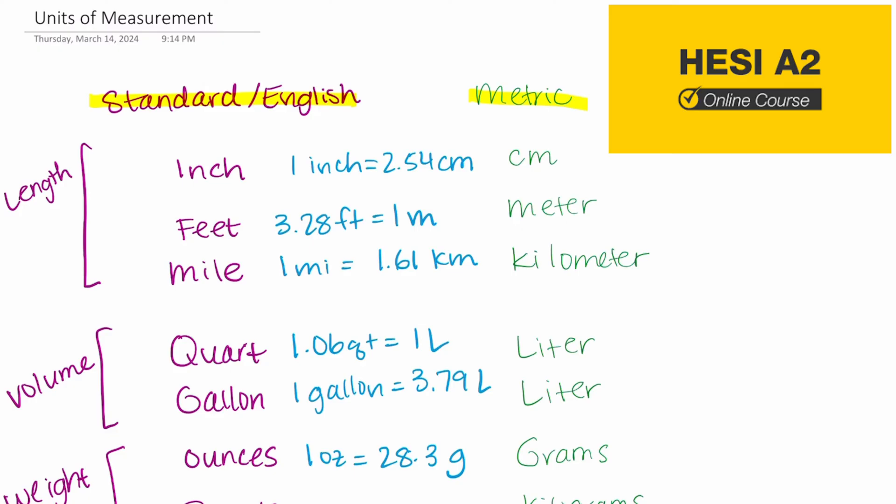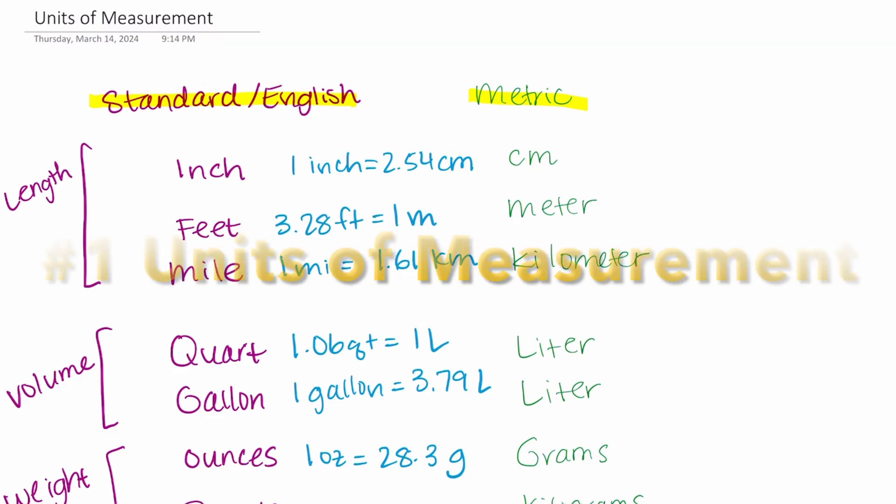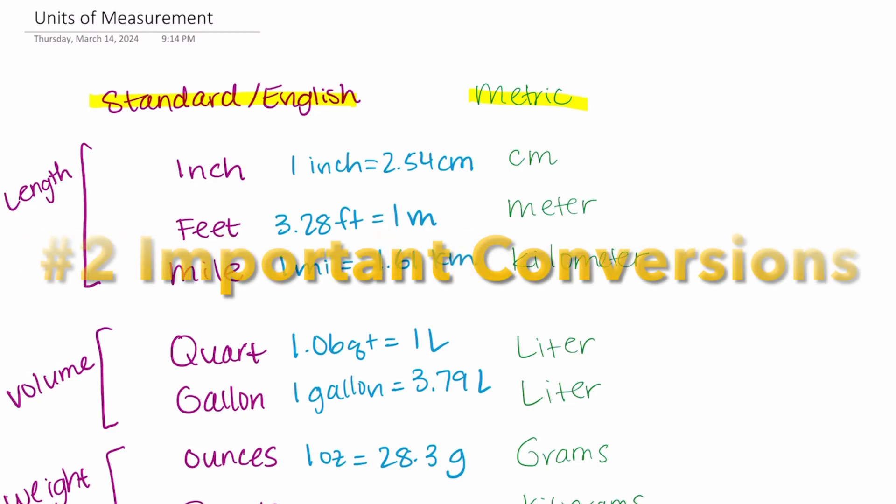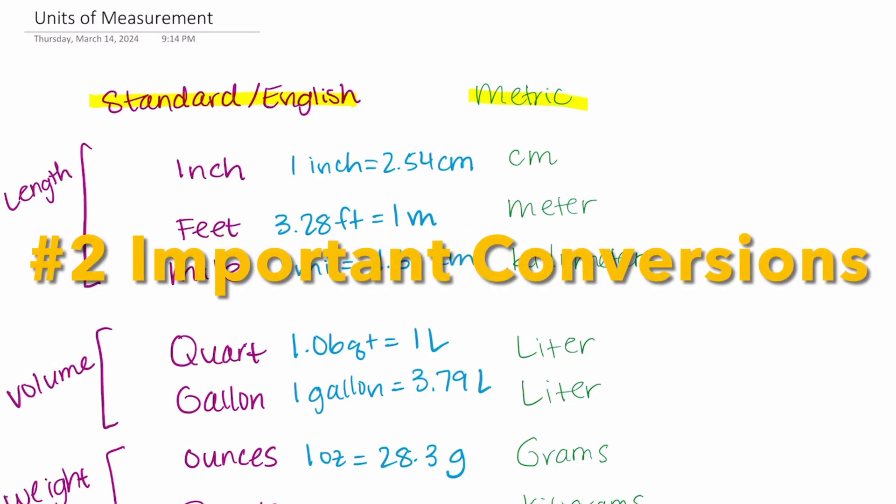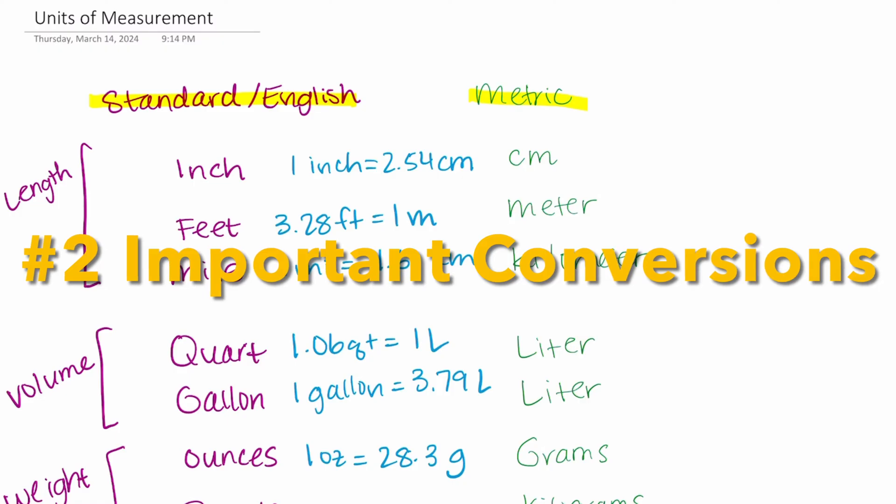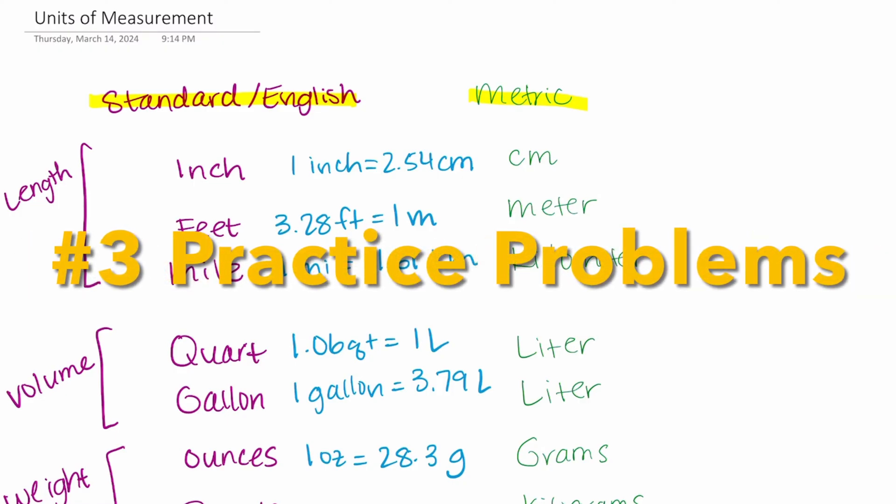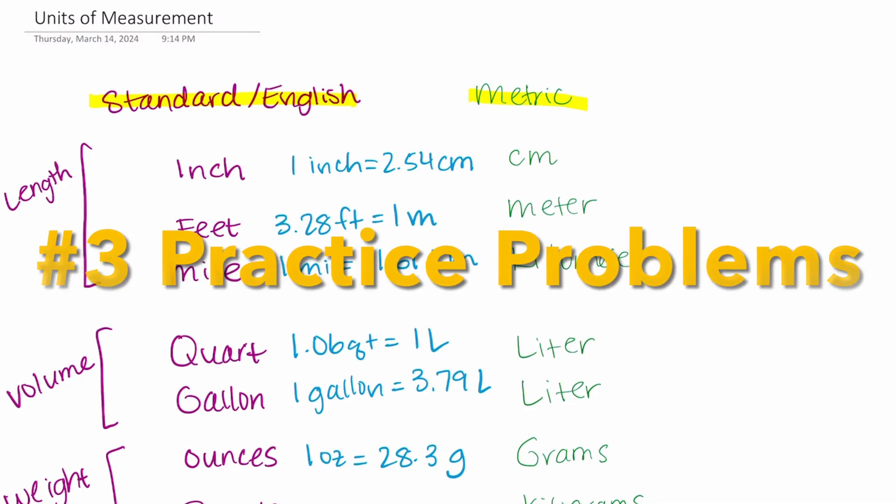We are going to talk all about different units of measurement that are important to know for the HESI A2 exam and then we're going to talk about important conversions that you should memorize. We will finish by talking through a couple practice problems together so that you can feel very confident and get a great score on your HESI A2 math section. So let's just dive right in.